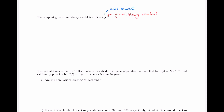Let's think about why P₀ is called the initial amount. What happens at time zero? If we plug in t = 0, we get P₀ times e to the power of k times 0. Since k times 0 is 0, and e to the power 0 is simply 1, the entire exponential term becomes 1, leaving just P₀. So when we plug in t = 0, we get this coefficient — which is why it's called the initial amount.